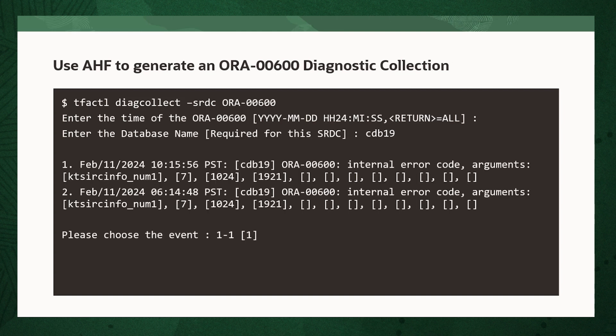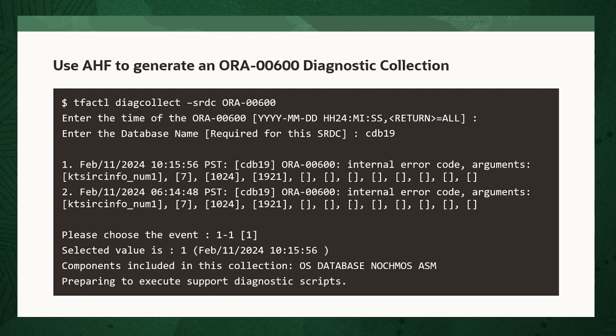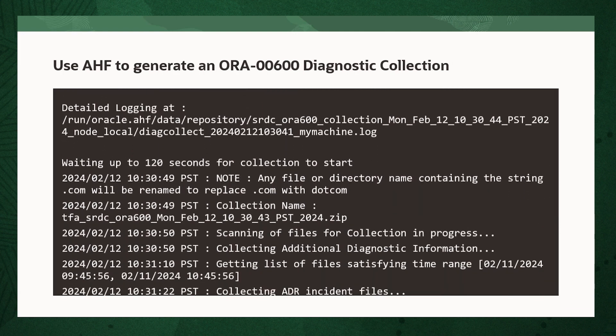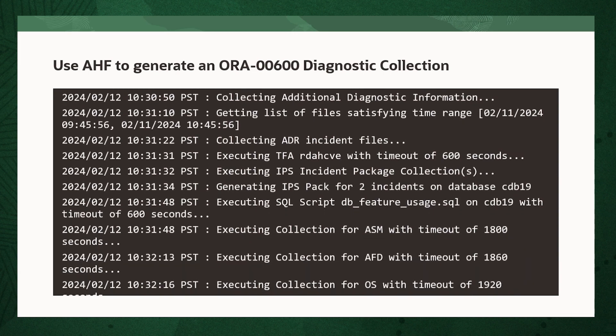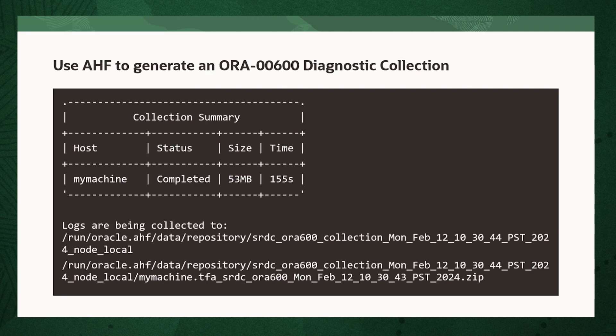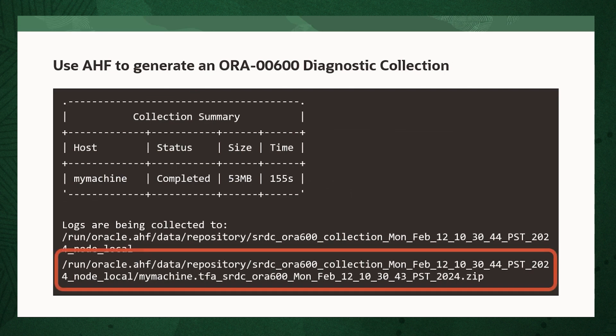AHF will then check to find all the ORA-600s that occurred on that database around the time you selected, or if you've left the prompts blank, it will find the most recent ones. It will then show you a list of everything it found and ask you to choose the specific ORA-600 you're interested in. In our case, we select number one. Once selected, AHF collects all of the relevant diagnostic information, trims the logs so that it only captures information from around the time you specified, and packages all of that into a zip file, as you can see on the screen.